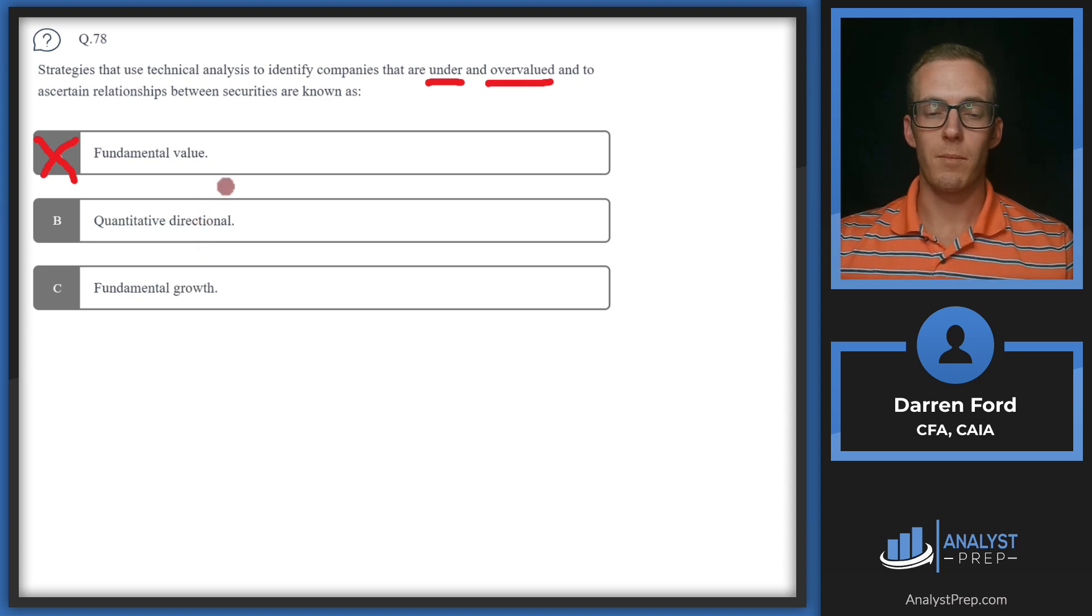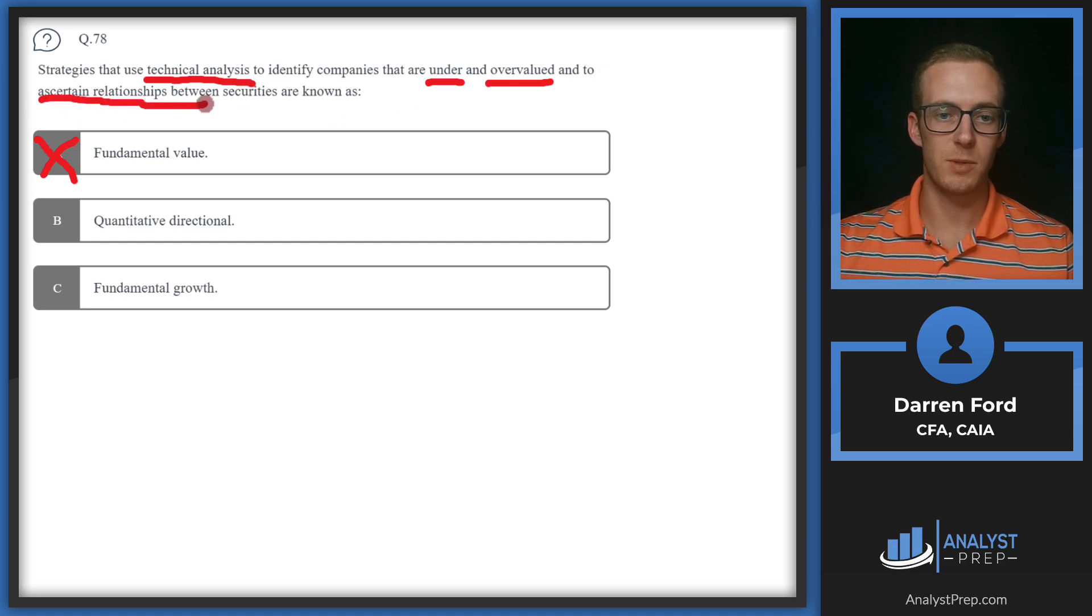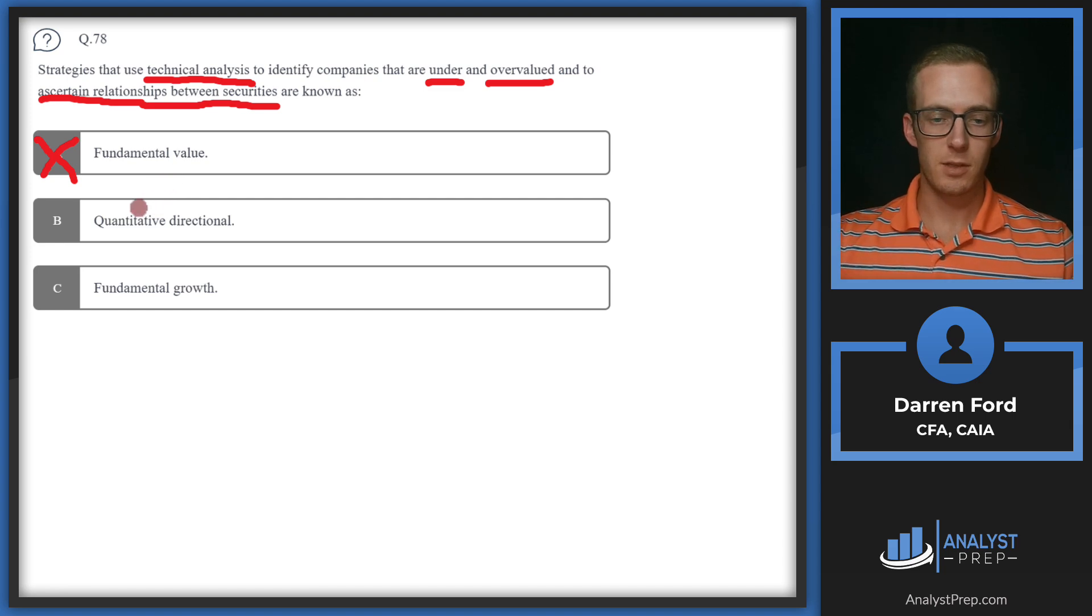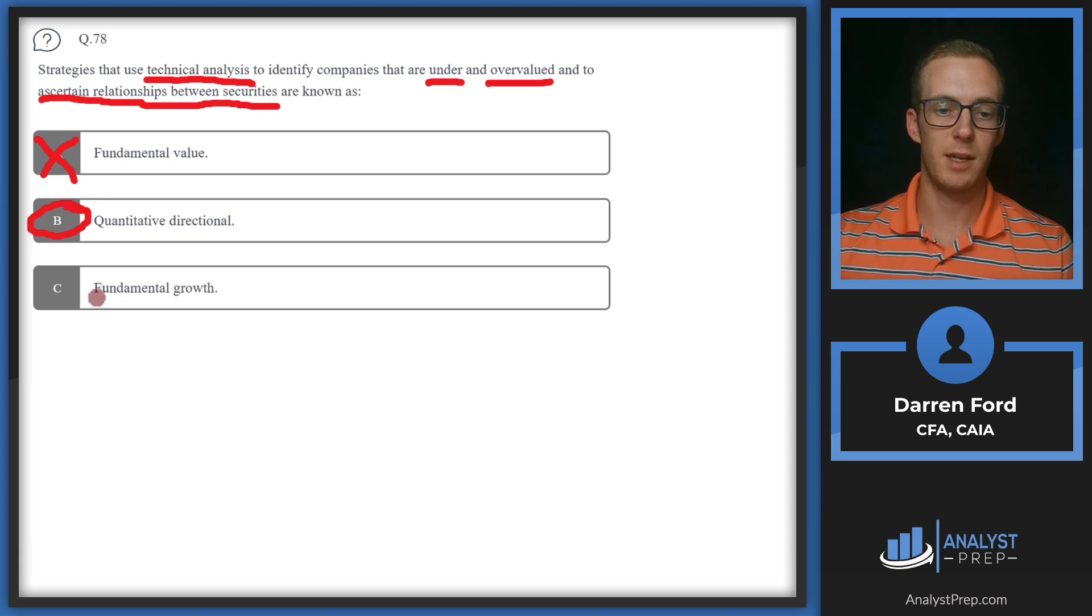B: Quantitative directional. This does sound like what the question is describing. Technical analysis is generally going to lean more towards quantitative strategies, and we're ascertaining relationships between securities, so this is likely some type of regression analysis that we're using, which is going to be quantitatively focused. We're probably using this and the under/overvalued to decide which securities to go long and short. Let's tentatively pencil in B.